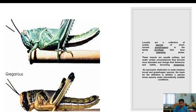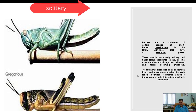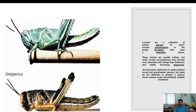Locust is nothing but a collection of certain species of short-horned grasshopper, belonging to the family Acrididae. Locusts have two phases: solitary phase and swarming phase. The insects are usually solitary, but under certain circumstances they become more gregarious and change their behavior and habits.